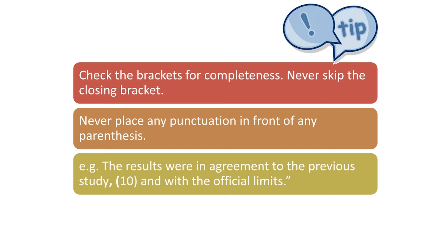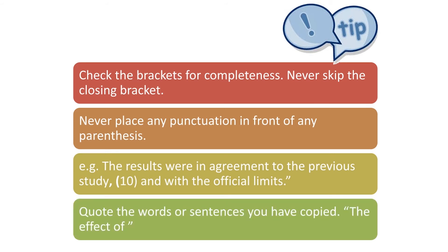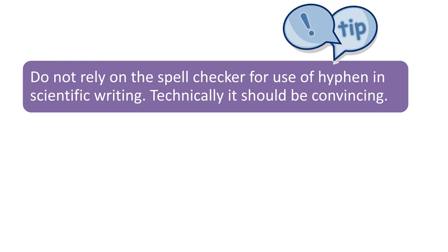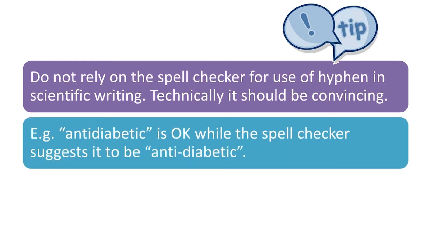Next thing: put the words or sentences you have copied under quotes. Do not rely on the spell checker for use of hyphen in scientific or academic writing. Technically it should be convincing. For example, 'anti-diabetic' is okay, while the spell checker suggests 'antidiabetic.' Write 'anti-diabetic,' which is more comfortable and more common and natural in academic writing.